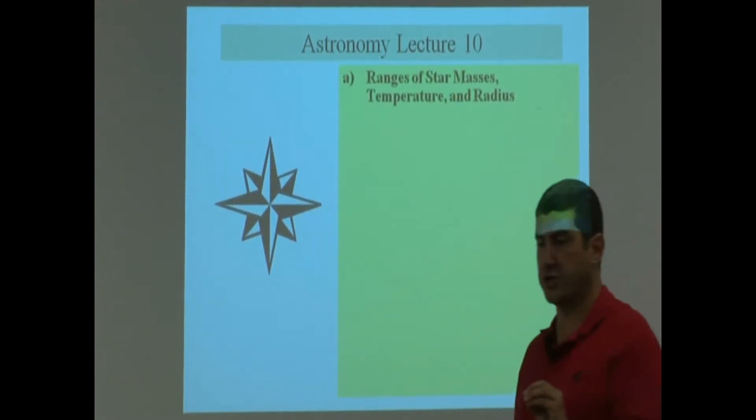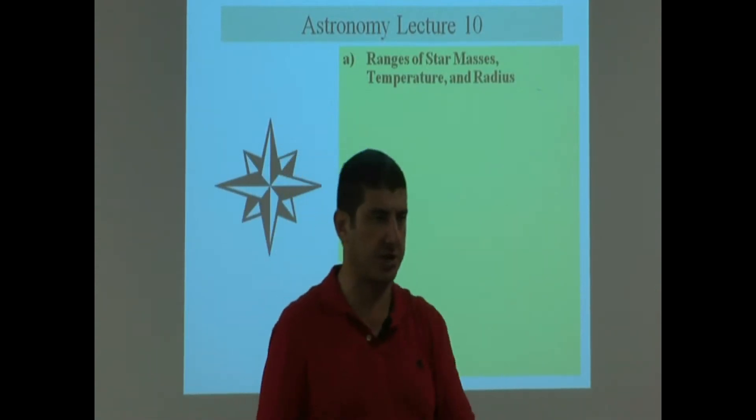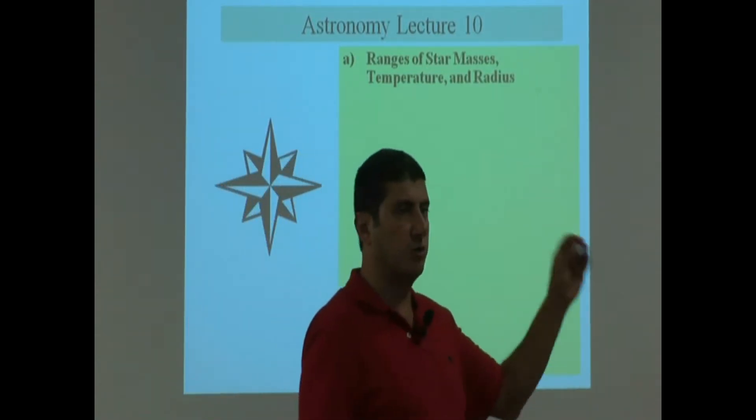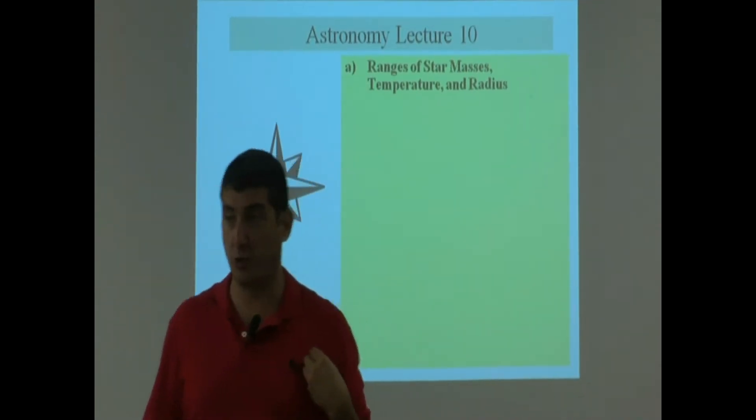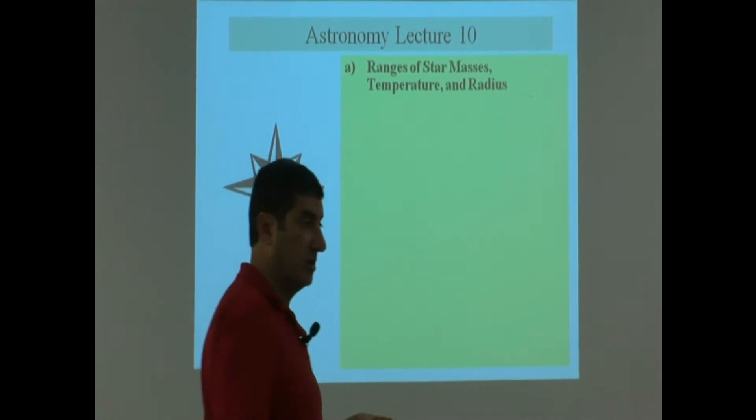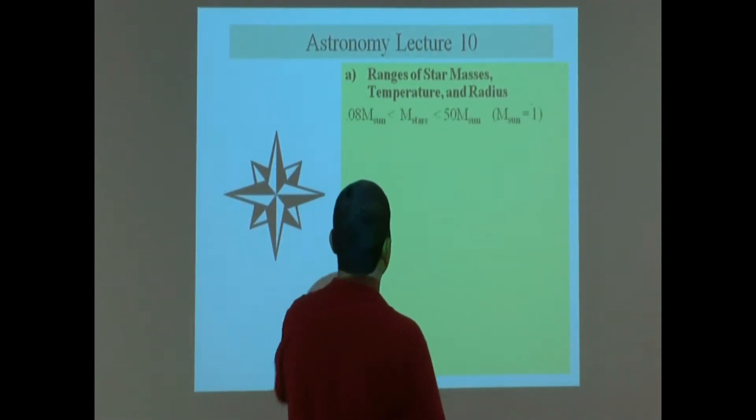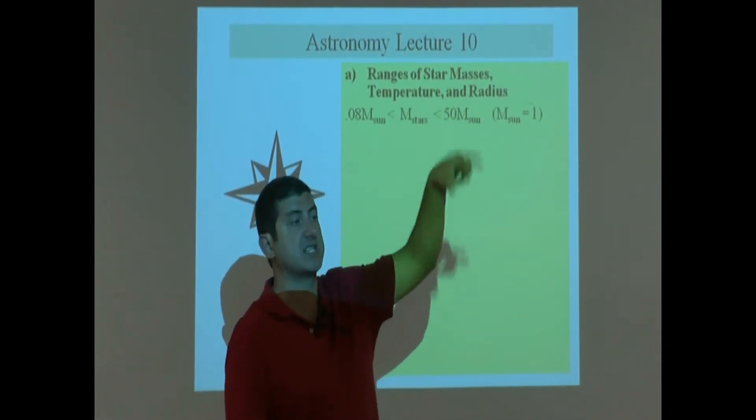So what we're looking at in this lecture is the properties of stars, what distinguish one star from another star. Now we've studied the Sun pretty much in detail, so when we study other stars, we're going to use our Sun as a reference point to compare other stars to. Our Sun will be the basis of comparison. So we would like to know what is the mass of other stars as compared to the mass of our own Sun.